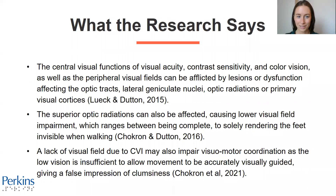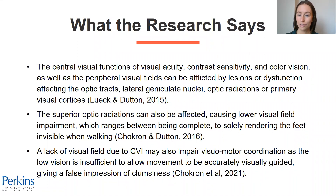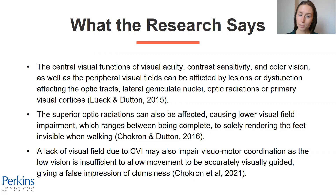The central visual functions of visual acuity, contrast sensitivity, and color vision, as well as the peripheral visual fields, can be afflicted by lesions or dysfunction affecting the optic tracts, lateral geniculate nuclei, optic radiations, or primary visual cortices. The superior optic radiations can also be affected, causing lower visual field impairment, which ranges between complete to solely rendering the feet invisible when walking.